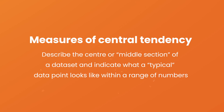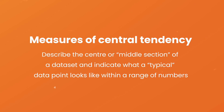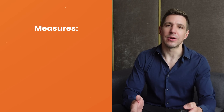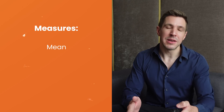Measures of central tendency describe the center or middle section of a data set — in other words, they provide some sort of indication of what a typical data point looks like within a range of numbers. The three most common measures of central tendency are the mean, the median, and the mode.